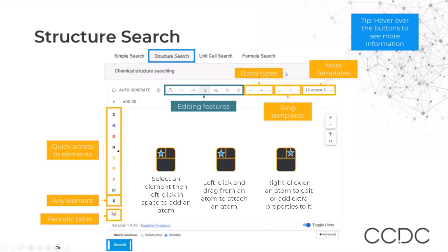We can also change bond types, and you can access more from the dropdown menu. We also have a selection of templates, both for rings and for more complex structures, and you can access them from the dropdown menus.